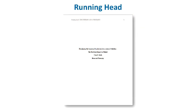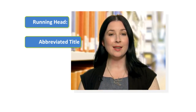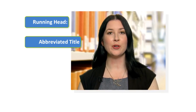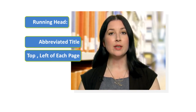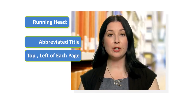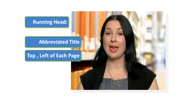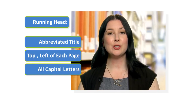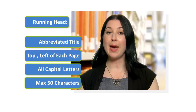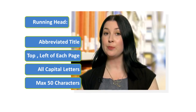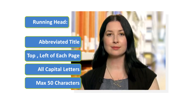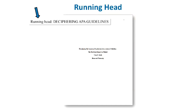You should also indicate on your title page what your paper's running head will be. A running head is an abbreviated or shortened version of your title. It should go in the top left-hand corner of every page of your paper, including the title page and the reference list. It should be written in all capital letters and be a maximum of 50 characters, including spaces and punctuation. On the title page, you use the label "running head" followed by a colon, and then your actual running head — for example, DECIPHERING APA GUIDELINES.